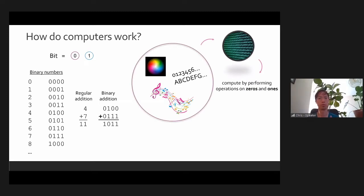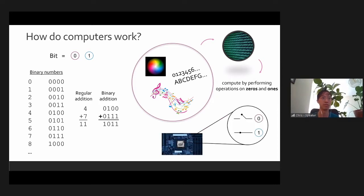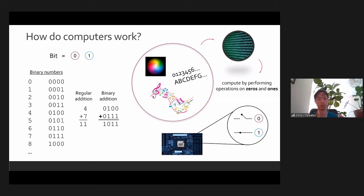This is a simple example of how a computer can do something like addition, but this is really the building block for all of computers. You can really represent anything you want — colors, numbers, letters, music, sound — all in terms of zeros and ones. If you want to do anything with it on your computer, it's always going to process those zeros and ones to make a movie or show you a picture. In all of the computers I listed, they always have some sort of chip. The zeros and ones in all your computers are electrical signals — you can think of them as a switch. A switch being open is a zero and a switch being closed is a one. That's really how all of modern computers work at the low level.